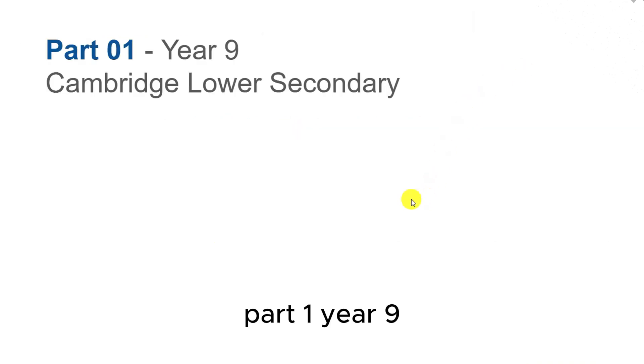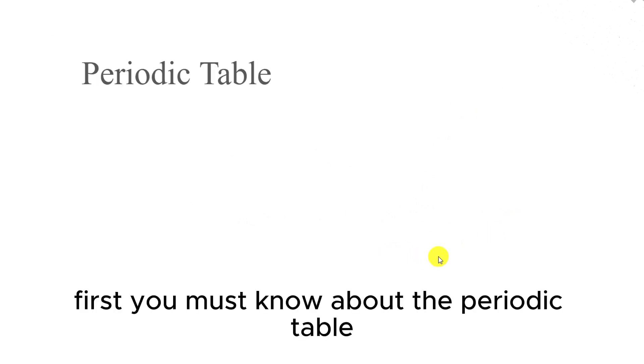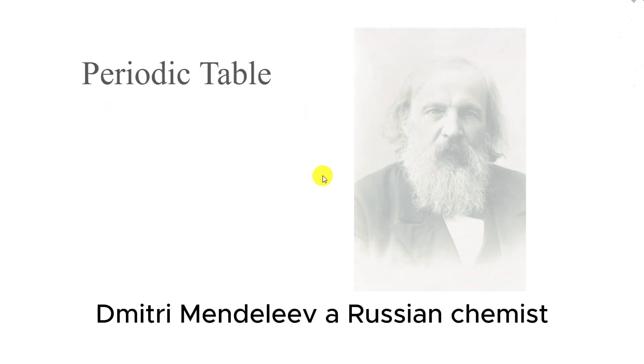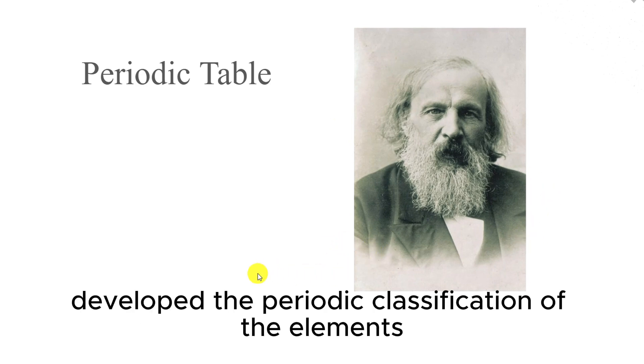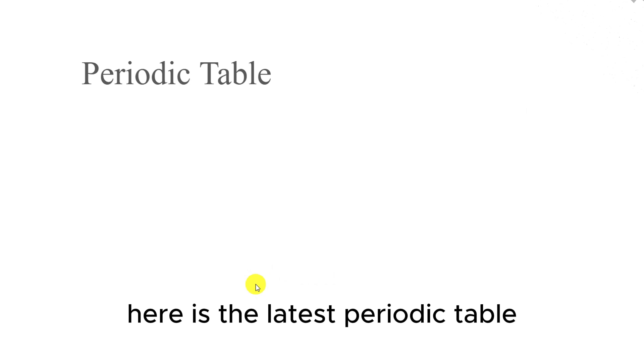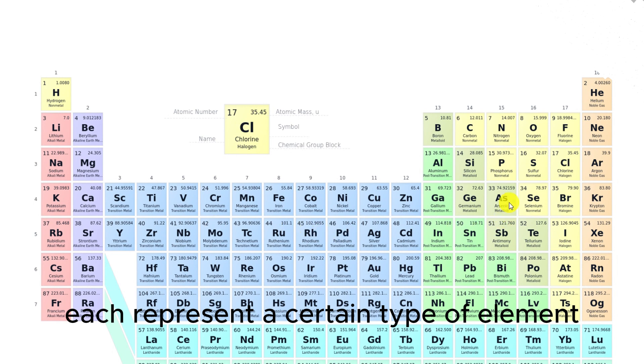Part 1, Year 9. Let's begin with the basics. First, you must know about the periodic table. Dimitri Mendeleev, a Russian chemist, developed the periodic classification of the elements. Here is the latest periodic table. If you pay attention to these boxes, each represent a certain type of element.